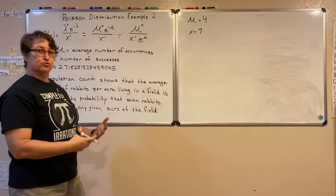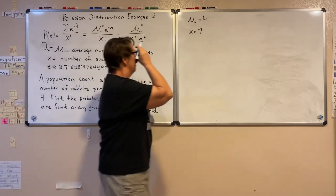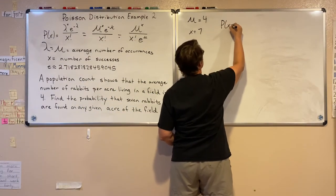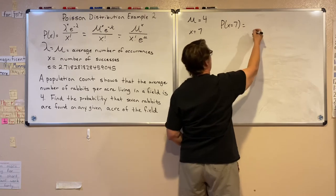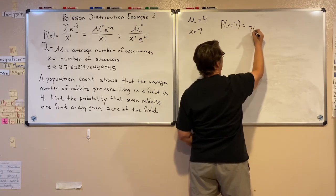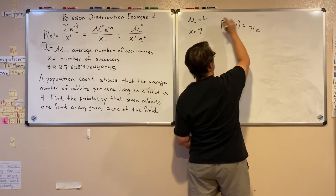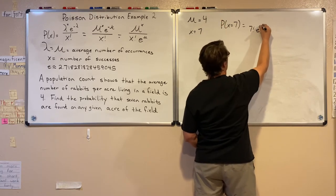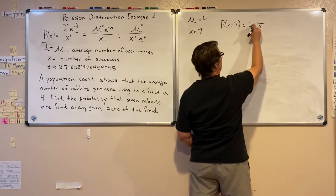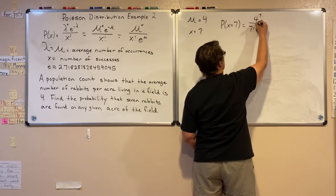We need two values: the average (mu = 4) and the number of successes we're looking for (x = 7). We're looking for exactly seven rabbits. Substituting into the formula: probability of x=7 equals 4 to the seventh power over 7 factorial times e to the fourth.